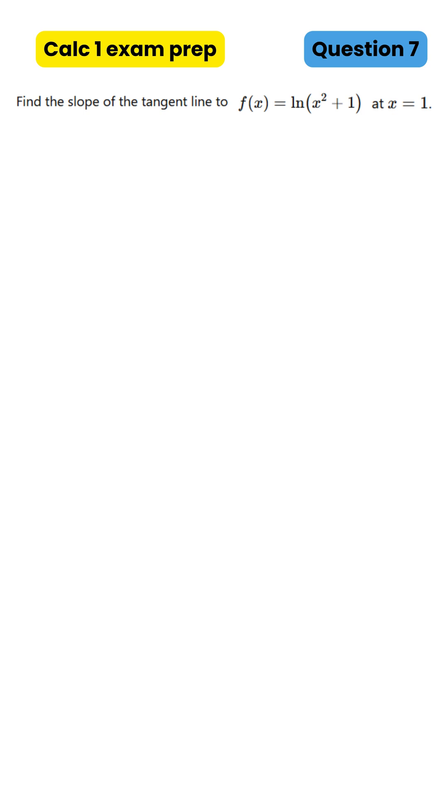Remember, to get the slope at a specific point, we always differentiate the function and then substitute that x value into the derivative. That gives the slope at that point, the slope of the tangent.